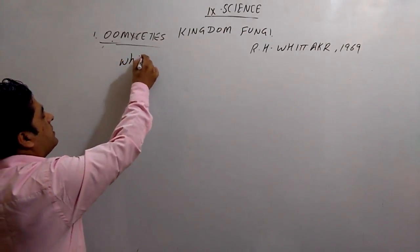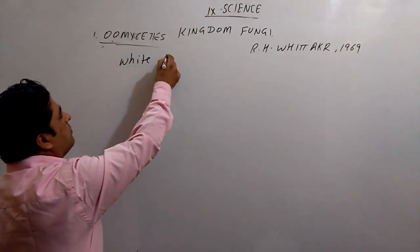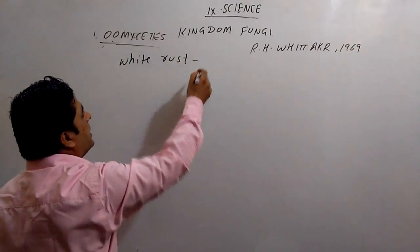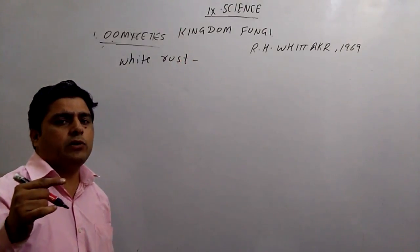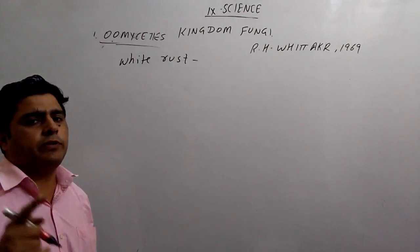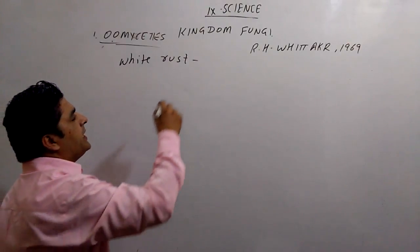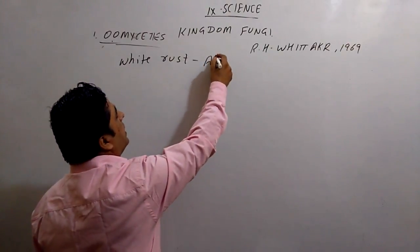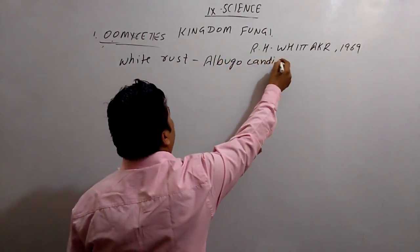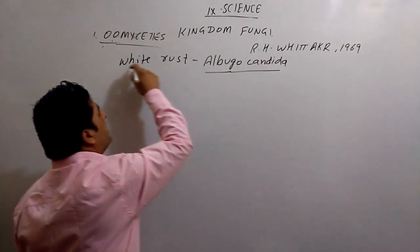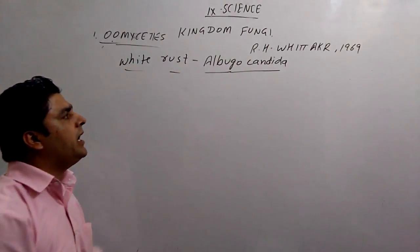Like white rust, the disease caused in crucifers, which is called Albugo candida. White rust caused by Albugo candida.